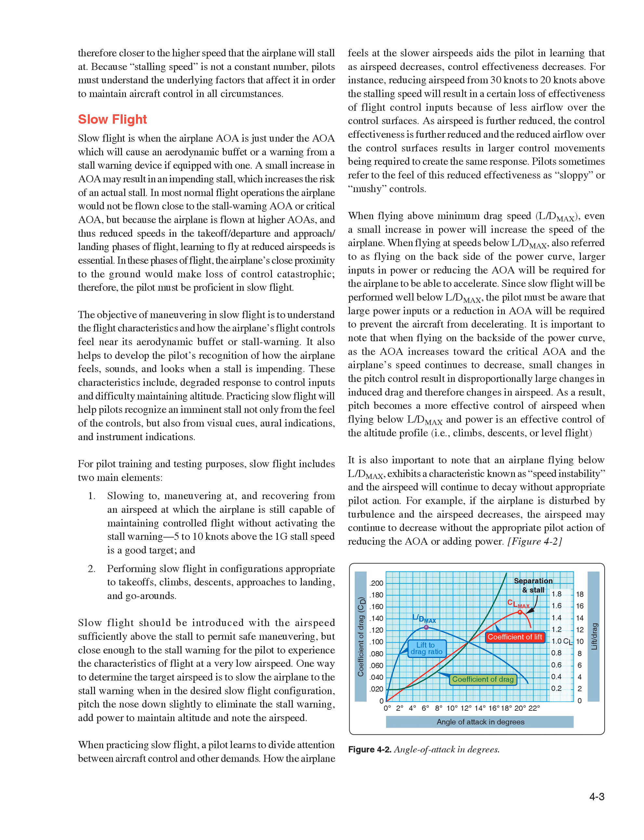Slow flight is when the airplane AOA is just under the AOA which will cause an aerodynamic buffet or a warning from a stall warning device, if equipped. A small increase in AOA may result in an impending stall, increasing the risk of an actual stall. In most normal flight operations the airplane would not be flown close to the stall warning AOA or critical AOA, but because the airplane is flown at higher AOAs in the takeoff/departure and approach/landing phases of flight, learning to fly at reduced airspeeds is essential. In these phases, the airplane's close proximity to the ground makes loss of control catastrophic, so the pilot must be proficient in slow flight.